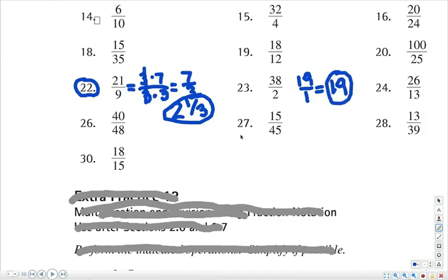Let's skip down to number 27. 15 over 45. I do know that 15 goes into 45, and the common mistake is to say, oh, that goes in 3 times. My answer is 3. No.